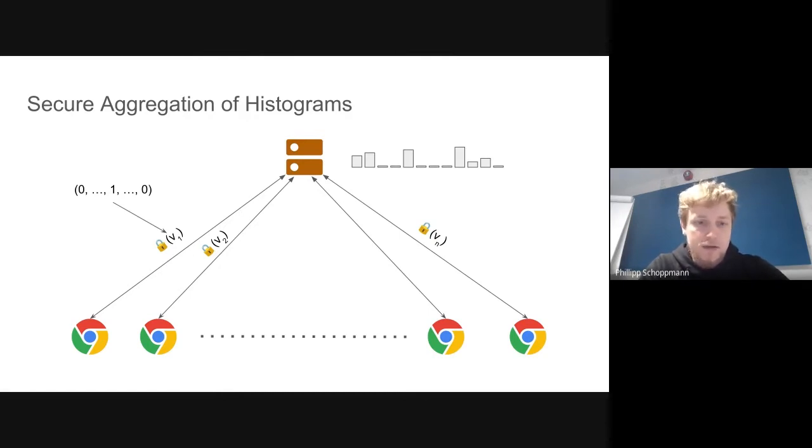In the single server setting, we have some issues with scalability. For example, we require an interactive protocol between the client and the servers to compute the sum. Additionally, we also require these encryptions that the client sends to the server to be as large as the domain of the vectors. Especially for large domain sizes, think 2^32, this becomes impractical.